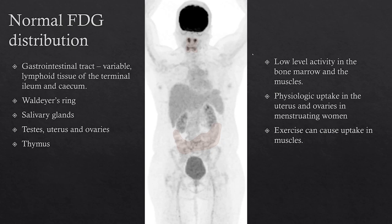In the bone marrow and muscles, you should not see any prominent uptake. However, exercise can cause uptake, which would typically be symmetrical. Sometimes if the patient has muscle spasm on one side, it may be asymmetrical, or if they've had surgeries or other things that change the muscle dynamics.